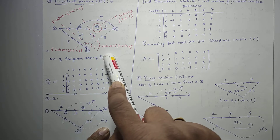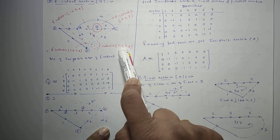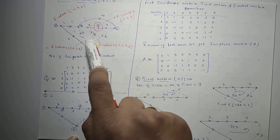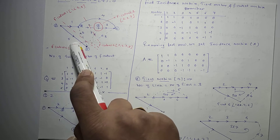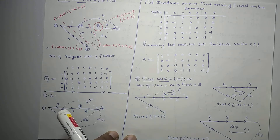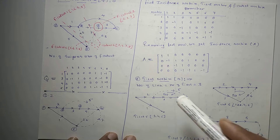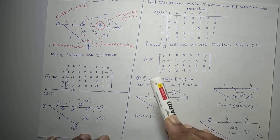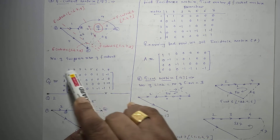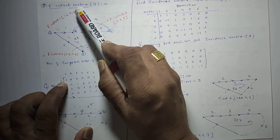For f cut set 4, the cut passes through branches 2, 4, 7, and 8. For f cut set 5, cut twig 5 along with the remaining links to divide the graph into two parts — this gives branches 5, 6, 7, and 8. The f cut-set matrix is a matrix of branches versus f cut sets. For f cut set 1, formed by branches 1, 6, 7, and 8, place 1s at those positions and 0s elsewhere.